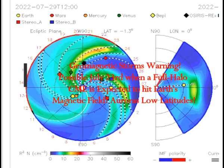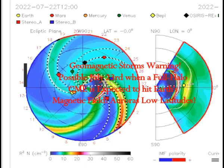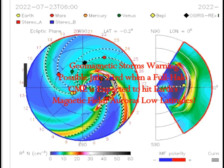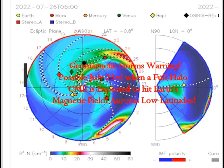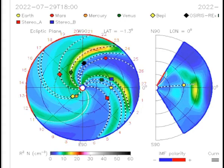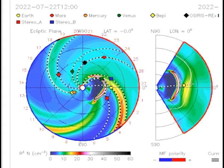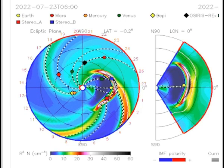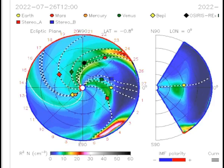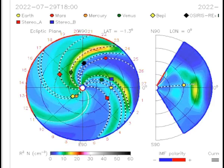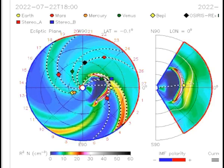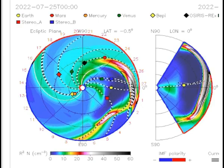Geomagnetic storms warning. Plural storms. The geomagnetic storms possible tomorrow, July 23rd, when a full halo CME is expected to hit Earth's magnetic field. The storm was hurled towards Earth yesterday. That was a fast solar flare coming in.